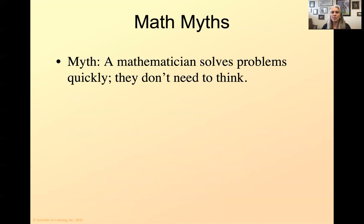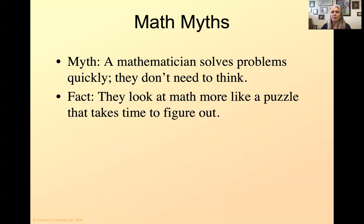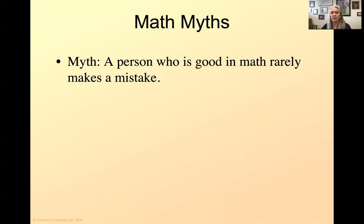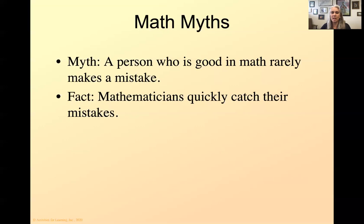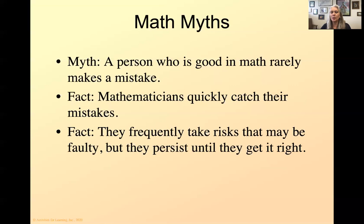Another myth: a mathematician solves problems quickly. They don't need to think. That is very false because they look at math like a puzzle and it takes time to figure it out. Now they tend to be good at it, so it looks like they're moving fast. It's just that they're thinking fast. Another myth: a person who is good in math rarely makes a mistake. Well, actually what happens is they quickly catch their mistakes. So they may make mistakes, but they can see that was a mistake and figure it out. They frequently take risks that may be faulty, but they persist until they get it right.